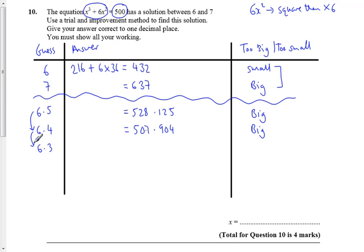6.3³ + 6 times 6.3². Here we go, when I do that I now get the answer 488.187, so now my answer is too small. I've sandwiched that 500 again between these two answers, so I'll make a second sandwich, wrap it up in cling film and I'm done.